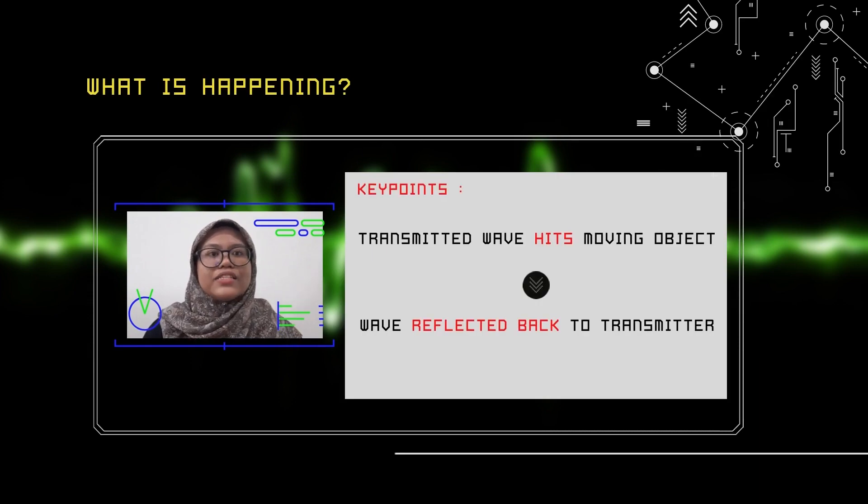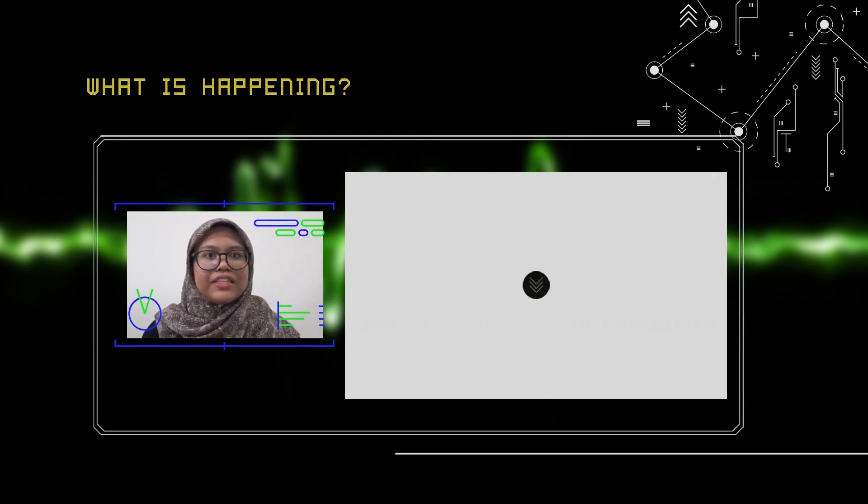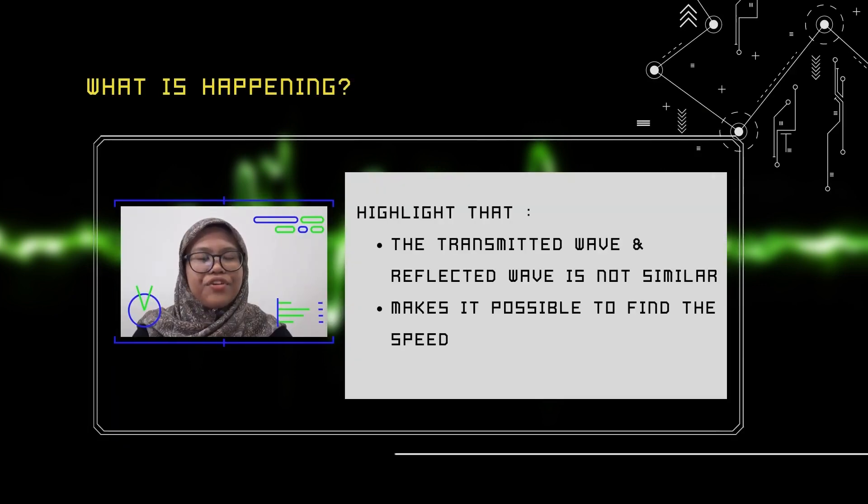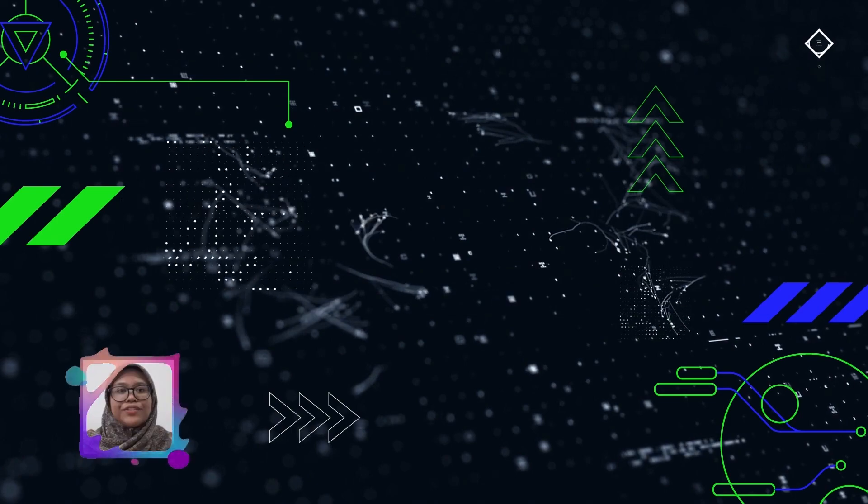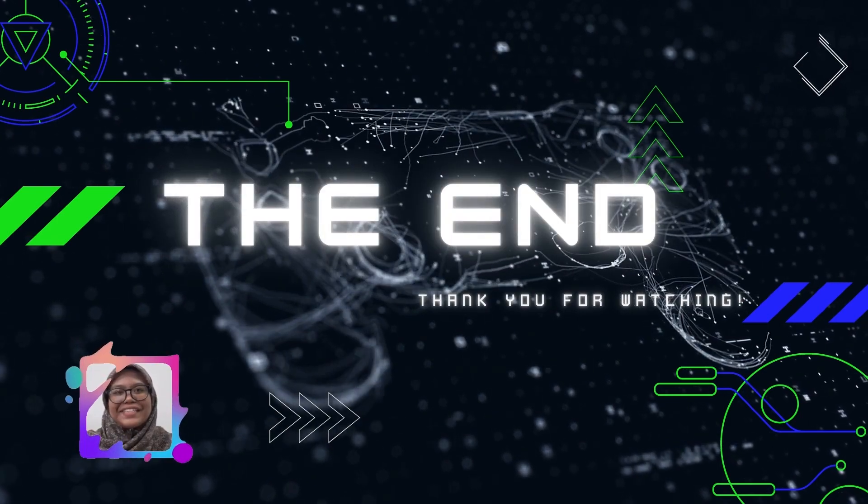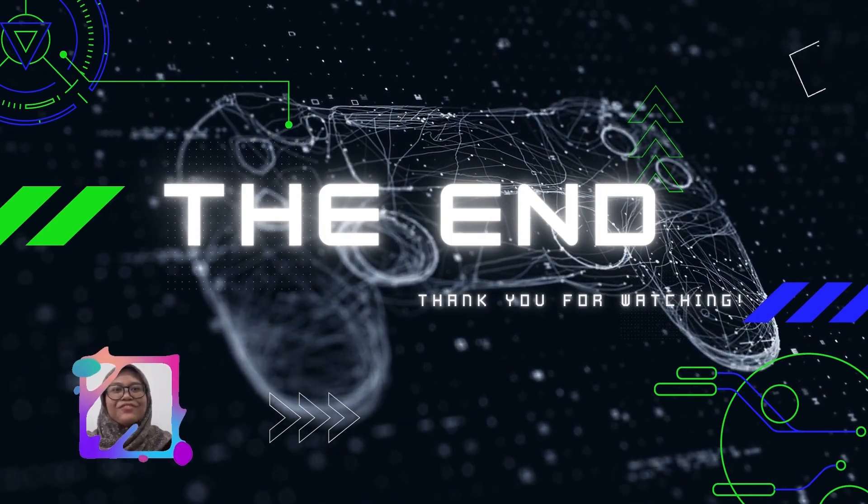All of this happens because the transmitted wave hits the moving object, and then the moving object reflects back the wave to the transmitter. The received frequency is different from the frequency within the transmitted wave. So, that is why we can calculate the speed of the moving object. That is all from me. I hope you understand the Doppler effect. Thank you for watching.